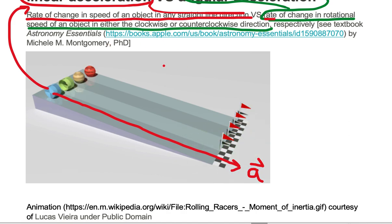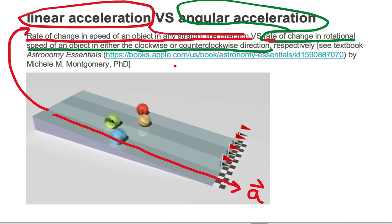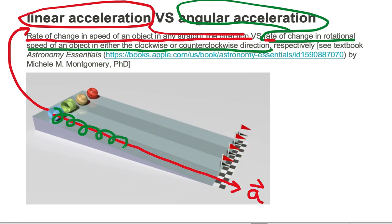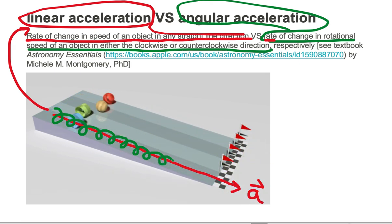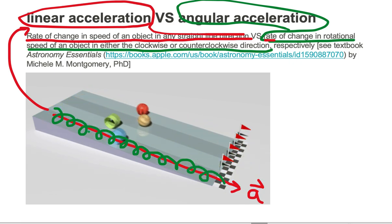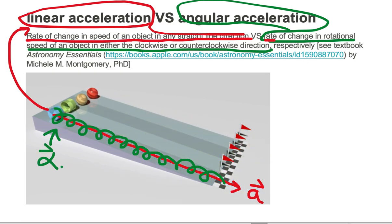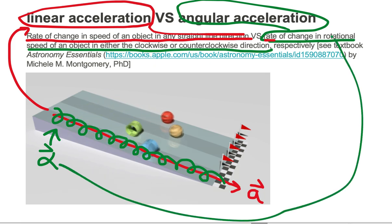Now let's take a look at an example of angular acceleration. Notice the same ball rotates around as the center of mass traverses in the straight line direction. The edge of the ball rotates around, increasing in speed in the circular or rolling direction. This increasing in angular speed is known as angular acceleration.